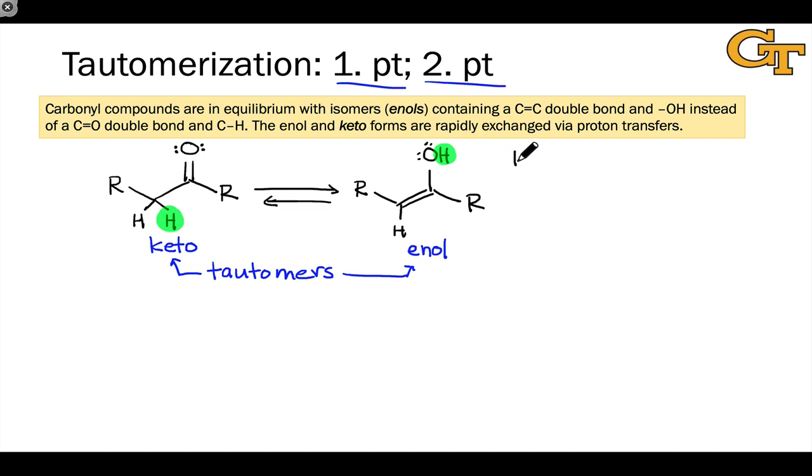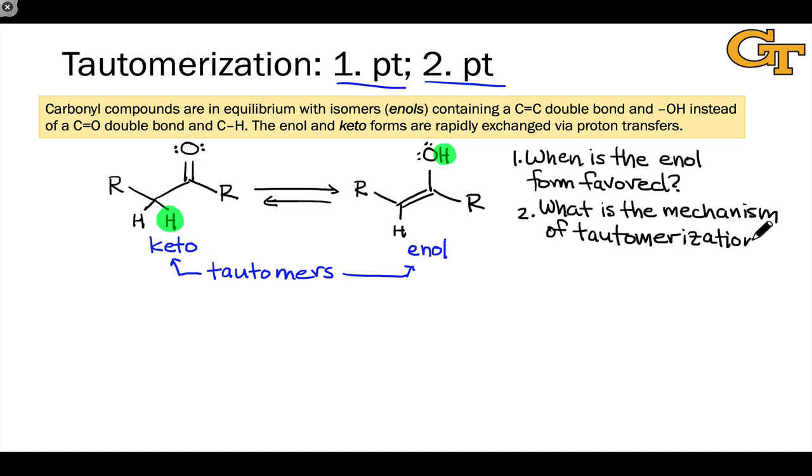However, there are certain circumstances in which the enol form is especially stable and therefore thermodynamically favored, and this is one question we're going to address in this video. The second question is what is the mechanism of keto-enol interconversion or tautomerization? We've hinted at that at the top of the slide, but we're going to look at the details and see that tautomerization must be acid or base catalyzed to proceed at an appreciable rate in general.